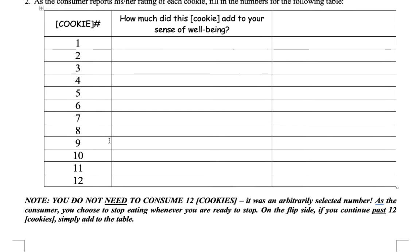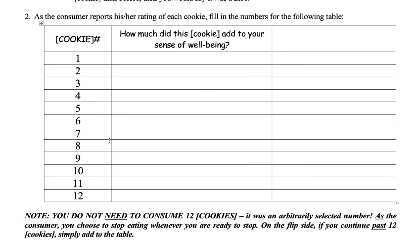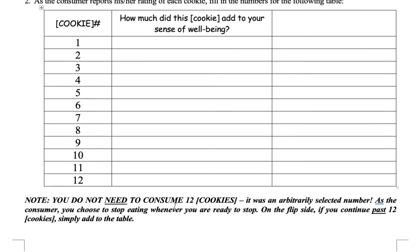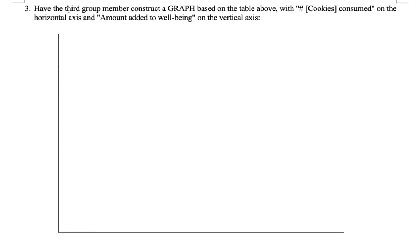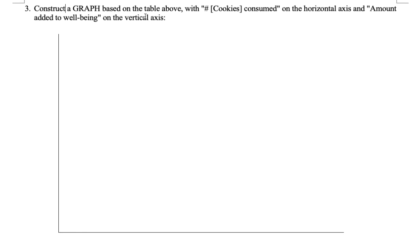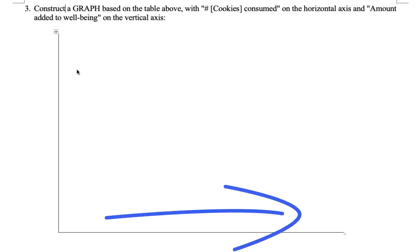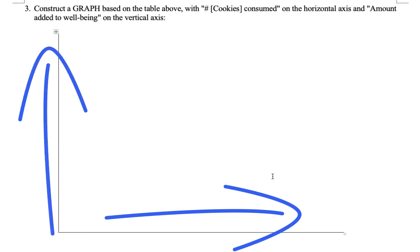It's always important that the consumer stop when they are ready to stop. If it's more than 12 units, just add the data to your table. On the second page, this is where you graph out your numbers — quantity consumed on the horizontal axis, and amount added to well-being on the vertical axis. Graph that out for me.